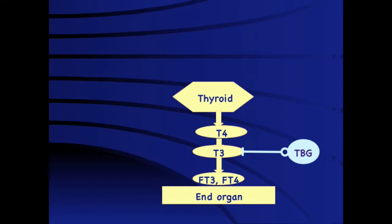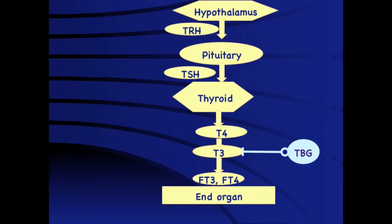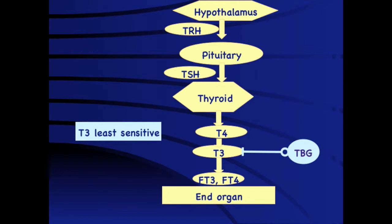The thyroid gland is controlled by the pituitary via the secretion of TSH, which is in turn regulated by the hypothalamus through secretion of thyrotropin releasing hormone (TRH). In hypothyroidism, the first feedback response is for the pituitary to increase TSH levels, which not only increases production of T4 but also increases peripheral conversion of T4 to T3. Therefore, T3 levels are the last to fall and T3 is the least sensitive marker of primary hypothyroidism.